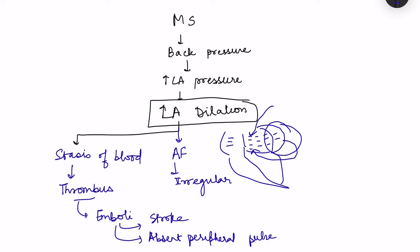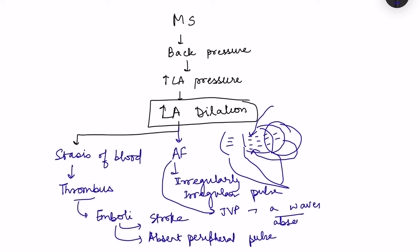If atrial fibrillation develops, the pulse will become irregularly irregular. In JVP, A waves will be absent because A waves are due to atrial contraction. Atrial fibrillation causes fibrillation of both sides since the heart is a syncytium, with re-entry circuits developing everywhere. JVP is a reflection of right atrial pressure, so A waves will be absent.